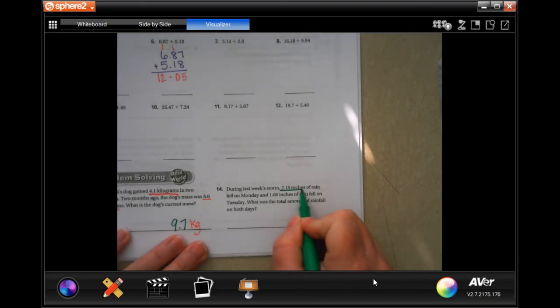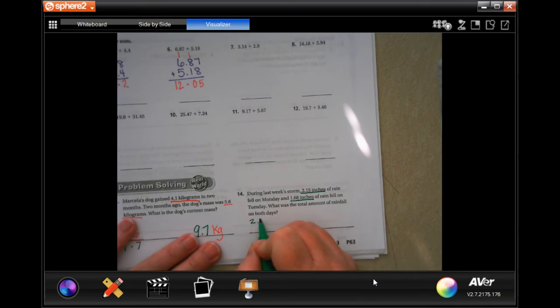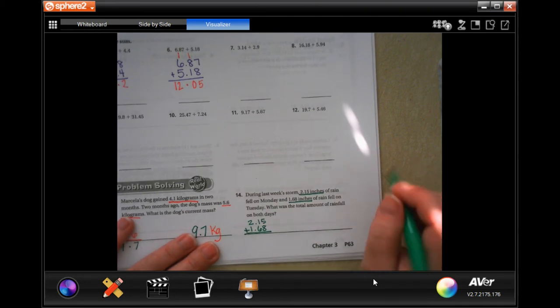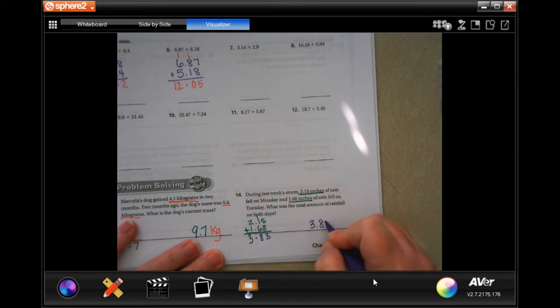During last week's storm, 2.15 inches of rain fell on Monday and 1.68 inches of rain fell on Tuesday. What was the total? So we have 2.15 and 1.68. If you need to, you can use scratch paper, wherever you feel most comfortable. First thing we're going to do is drop our decimal. 5 plus 8 is 13, carry the 1. 1 plus 1 is 2, plus 6 is 8. And 2 plus 1 is 3. So 3.83, and it's being measured in inches.